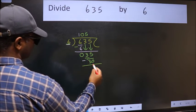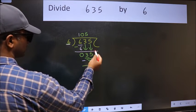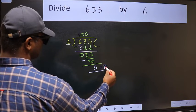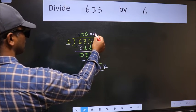We get five. No more numbers to bring down, so we stop here. This is our remainder and this is our quotient.